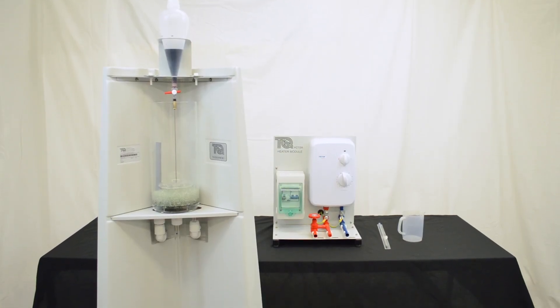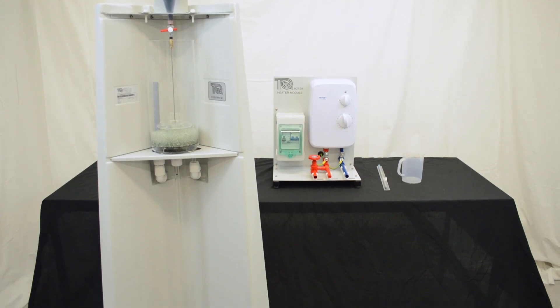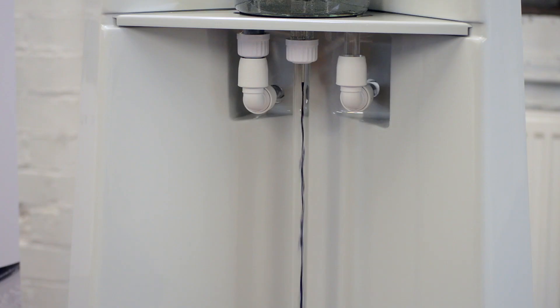The Osborne Reynolds apparatus allows you to study the nature of the flow in a pipe by observing the behaviour of a filament of dye injected into the fluid.